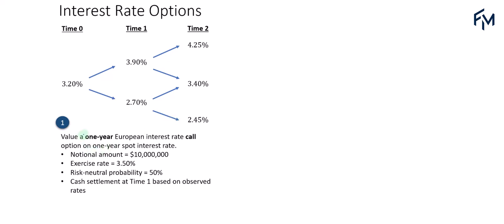We'll start off with example one, where we will value a one-year European-style interest rate call option on a one-year spot interest rate. We will assume that the notional amount is $10 million, the exercise rate is 3.5% of the par or the notional, the risk-neutral probability is 50%, and the cash settlement will be at time one. The observed rates are 3.9% if the interest rate goes up, and 2.7% if the interest rate goes down.